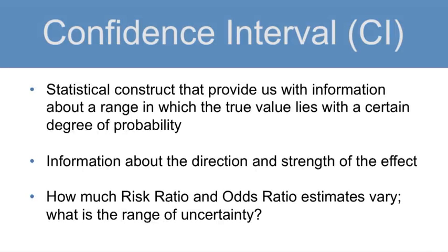Sometimes you might see a measure of disease occurrence or a measure of association accompanied by a confidence interval. Confidence intervals are a statistical construct that provide us with information about a range in which the true value lies with a certain degree of probability, as well as information about the direction and strength of the effect. Since we don't know the true value of, say, a risk ratio or an odds ratio, we calculate their estimates. Confidence intervals let us know how much our estimates of these measures of association might vary.